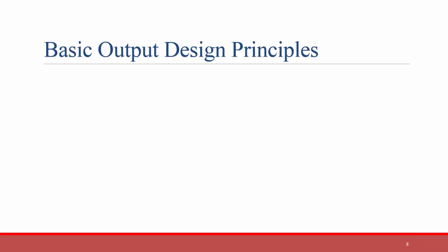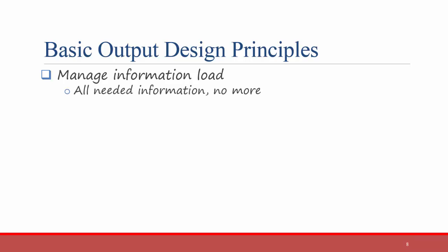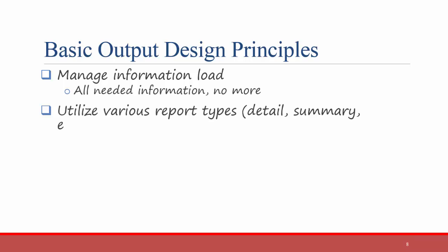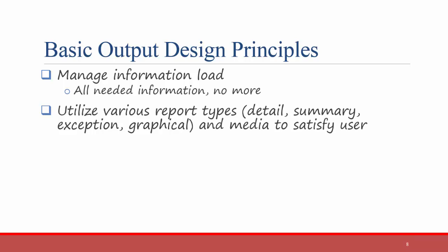Let's talk briefly about output design principles. The key thing is to manage the information load — give people the needed information, but no more. Don't overwhelm them with information. Utilize various report types such as detail, summary, exception, and graphical, and different media to satisfy users' output requirements. For example, if you're using accounting software and you just want to see overall revenues and expenses, the system should provide a way to see just a summary report.